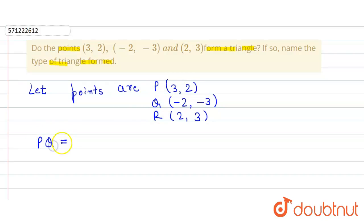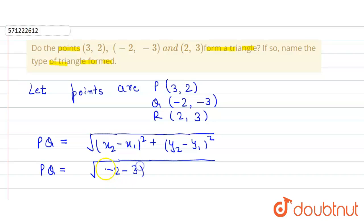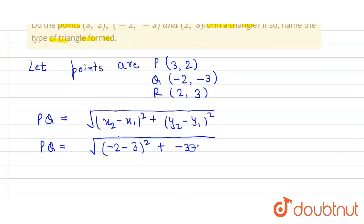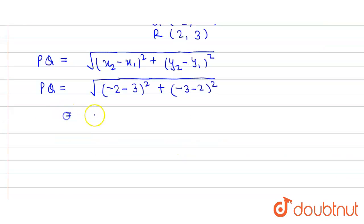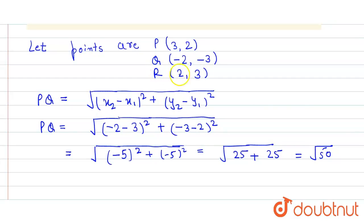Using the distance formula √((x2 - x1)² + (y2 - y1)²), the distance PQ equals √((-2 - 3)² + (-3 - 2)²) = √((-5)² + (-5)²) = √(25 + 25) = √50.